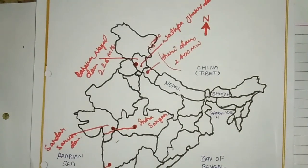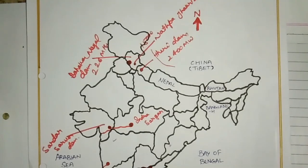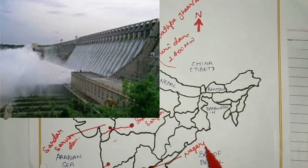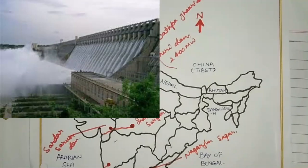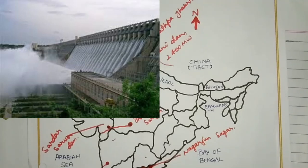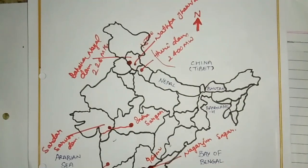Next is the Nagarjuna Sagar Dam, which produces 500 MW of electricity. It is located in the Andhra Pradesh district.